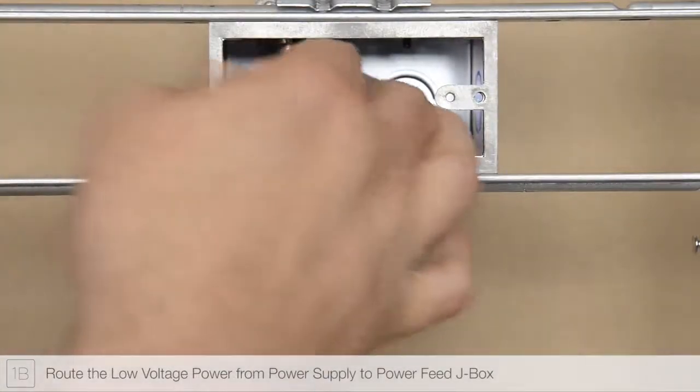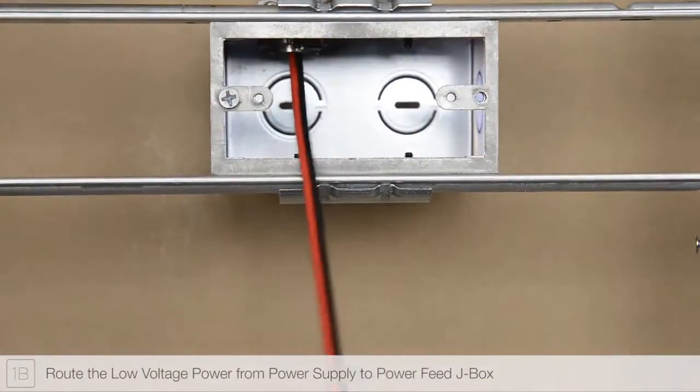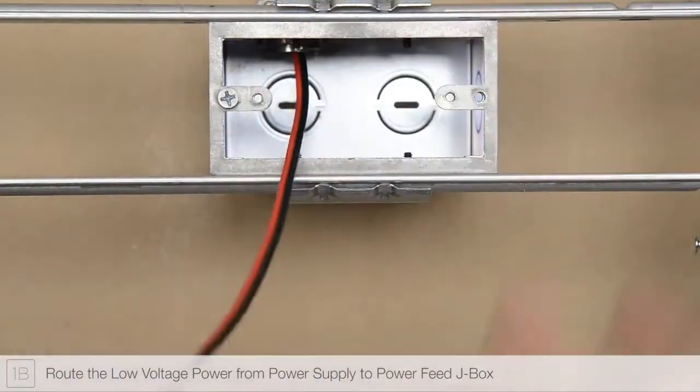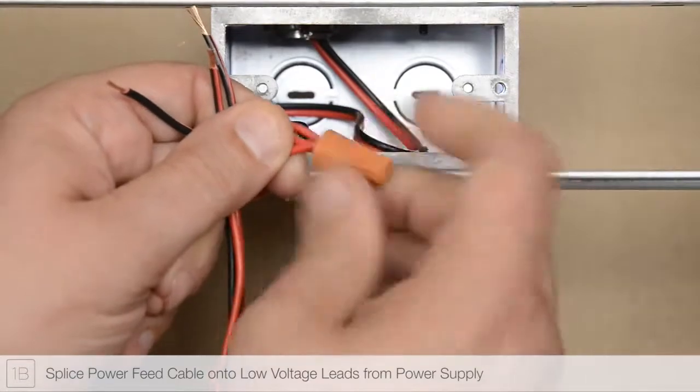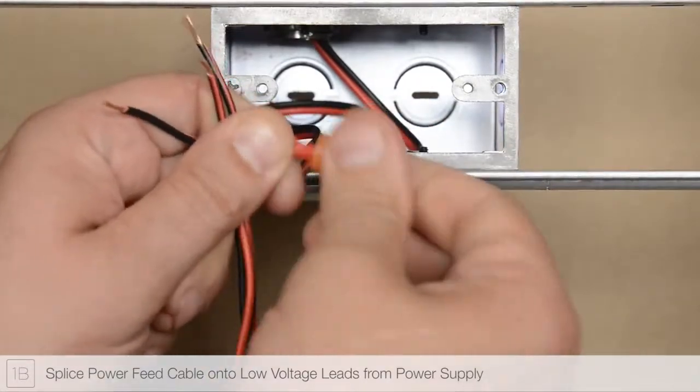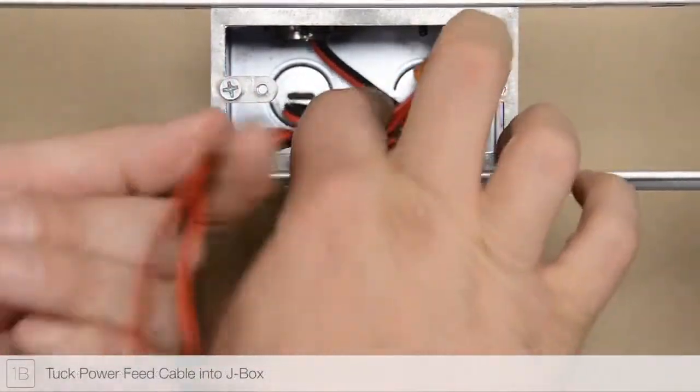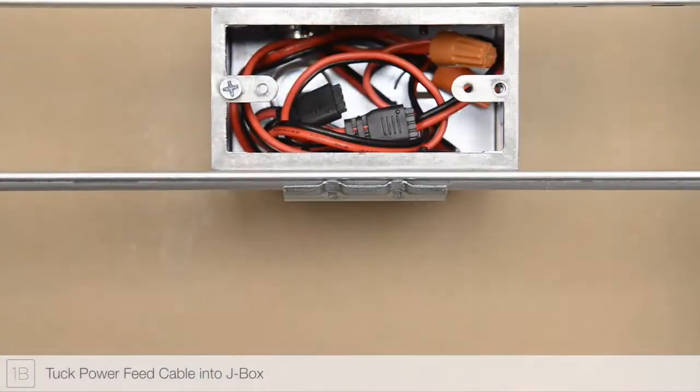Route the low voltage power wires from the remote power supply to the power feed junction box. Splice the included power feed cable to the low voltage power wires using wire nuts. Place all electrical connections into the junction box.